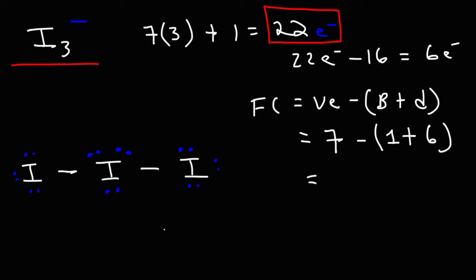Now, let's focus on the one in the middle. That iodine atom still has 7 valence electrons, but in this structure, it has 2 bonds and 6 dots. So it's 7 minus 8. Therefore, it bears the negative 1 formal charge.